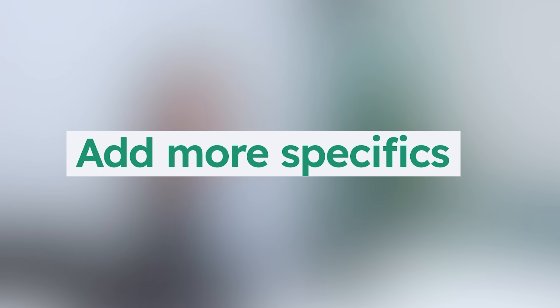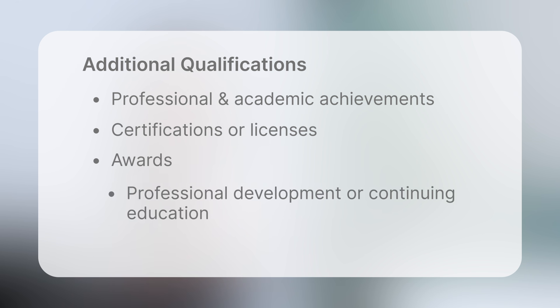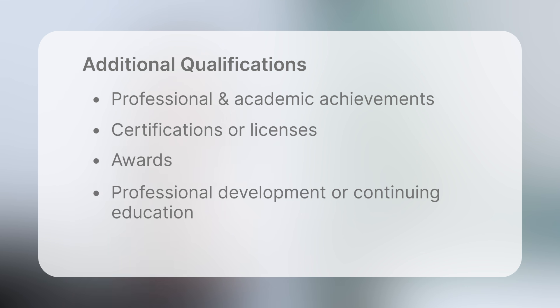Step 2: Add more specifics. We're going to use our second prompt to fill out the resume with more in-depth experience. Make a list of all the additional qualifications that'll strengthen your resume — things like professional and academic achievements, certifications or licenses, awards, professional development or continuing education, and technical skills.